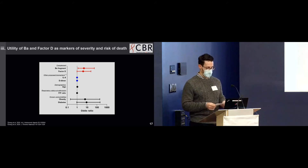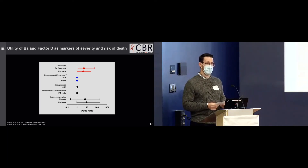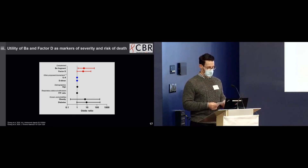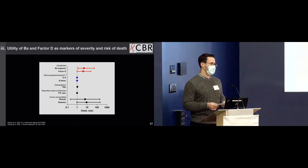Given their persistent elevation, we found that both the concentrations of the Ba fragment and factor D at the time of ICU admission showed utility in predicting mortality in the following 30 days. The odds of dying increased fourfold on average for every one unit increase in Ba or factor D in this cohort. These values were comparable to other known risk factors such as obesity and diabetes.